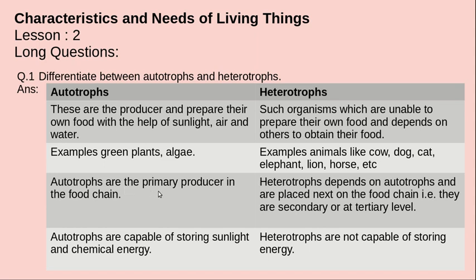Autotrophs are the primary producers in the food chain. Heterotrophs depend on autotrophs and are placed next on the food chain. They are at the secondary or tertiary level.